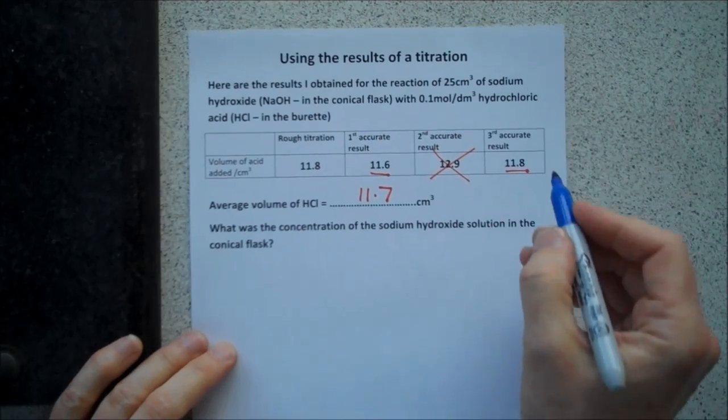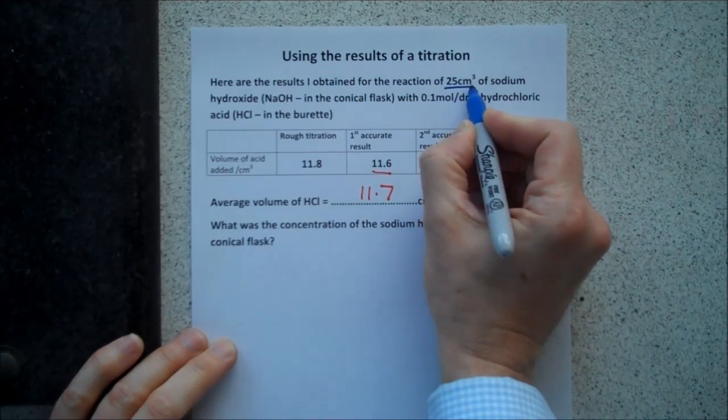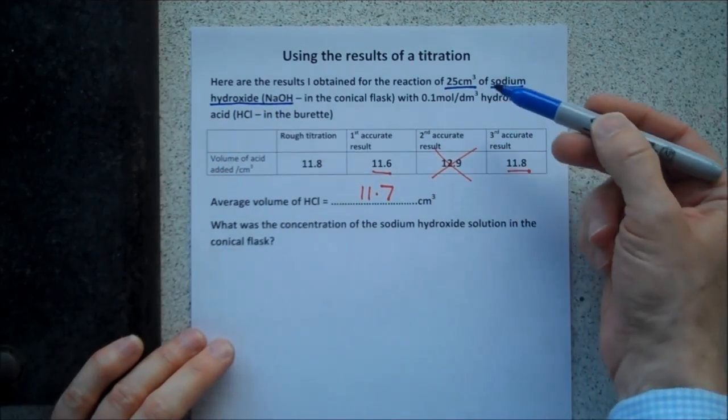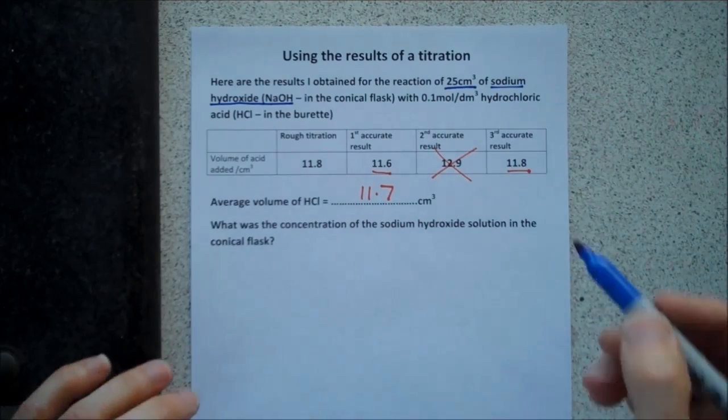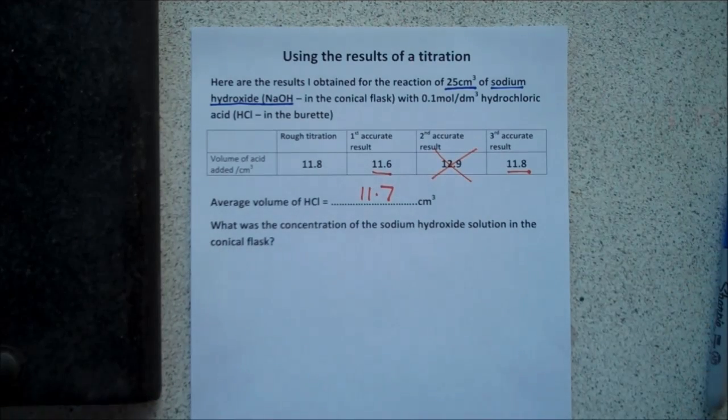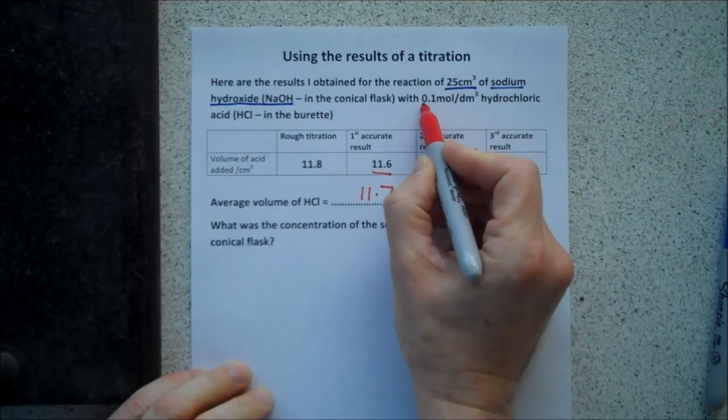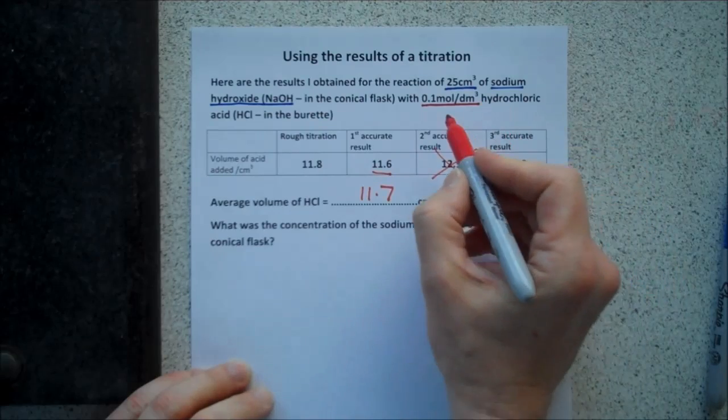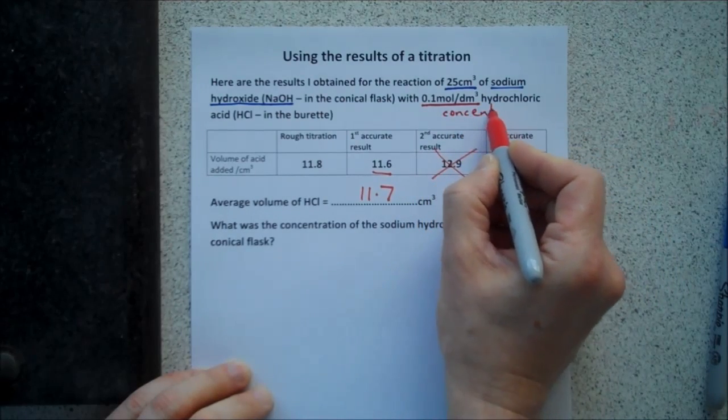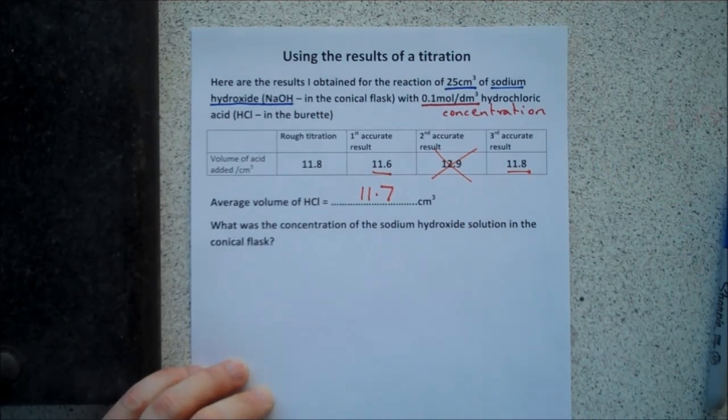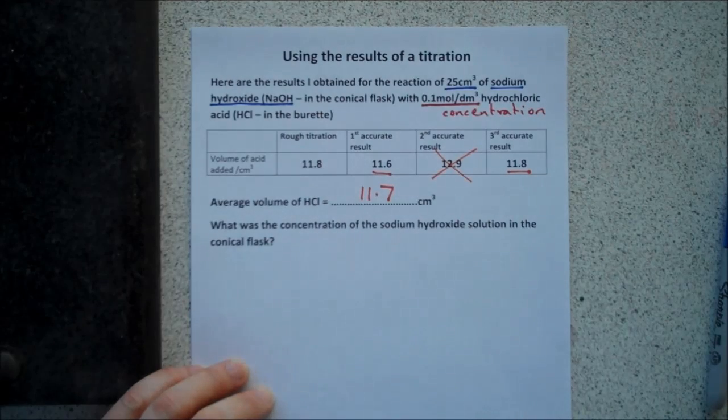So, for example, we're told the reaction involved 25 centimetres cubed of sodium hydroxide. Now, that's an alkali, and I've underlined my volume of alkali in blue, just because it seems a suitable colour. My acid, hydrochloric acid, I'm told 0.1 moles per decimetre cubed. That's the concentration. In an exam, there's no reason why you shouldn't use a highlighter pen to highlight the information you've been given about the sodium hydroxide and the hydrochloric acid, or whichever acid or alkali it is.